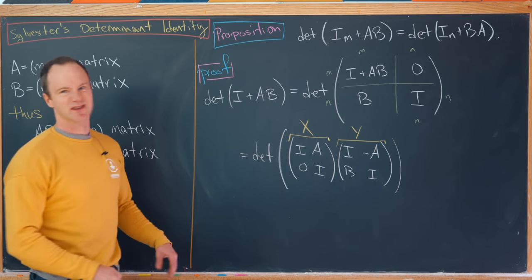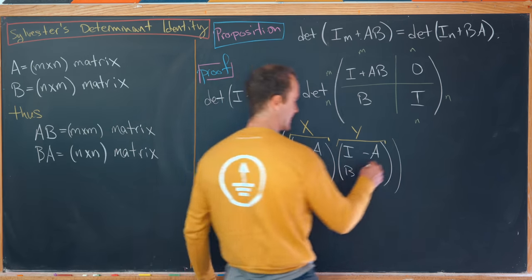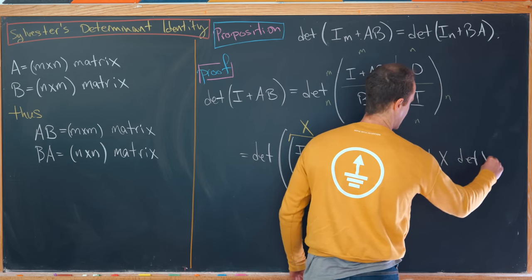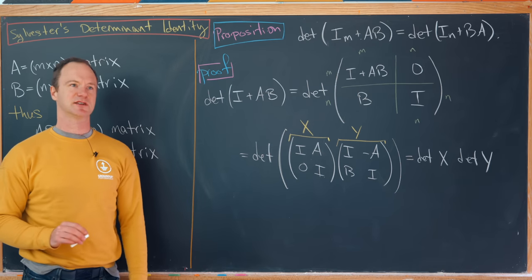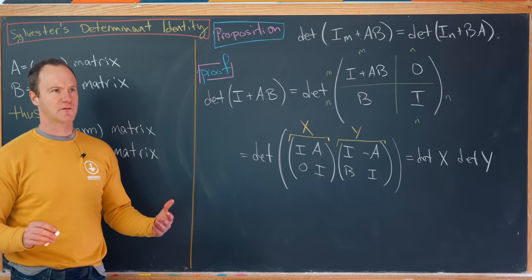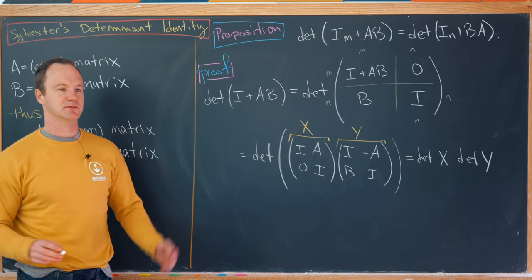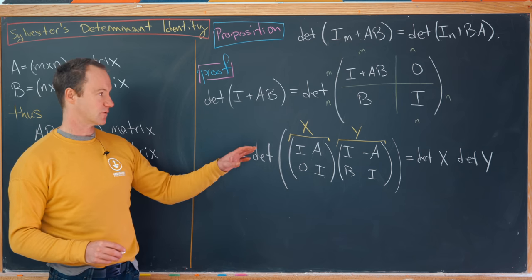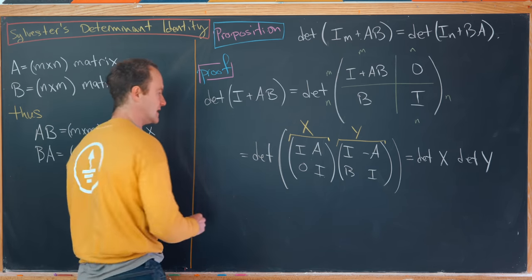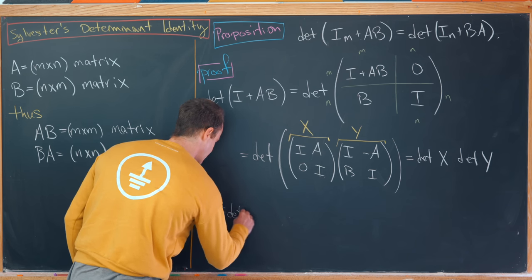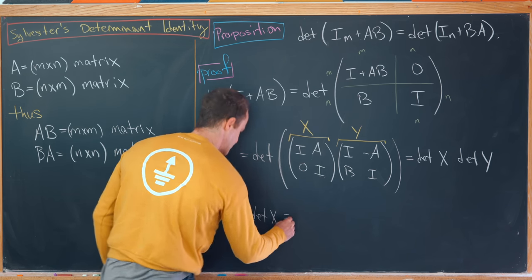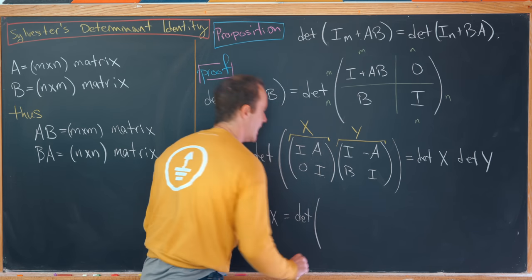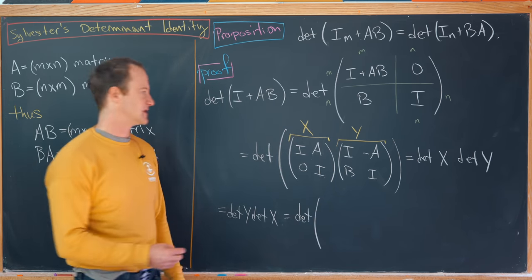Now we can use a standard rule for determinants that says this is the determinant of X times the determinant of Y. Using fancy words, the determinant is a homomorphism from matrix multiplication into multiplication of real numbers. And then, now that we're in multiplication of real numbers with the determinants, we have commutativity. So this gives us the determinant of Y times the determinant of X. But now we can put this back together into the determinant of the matrix Y times the matrix X.